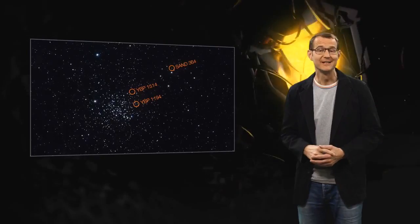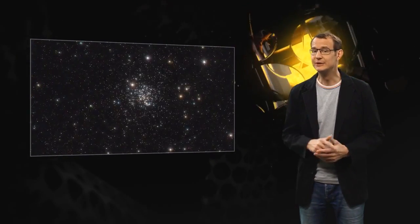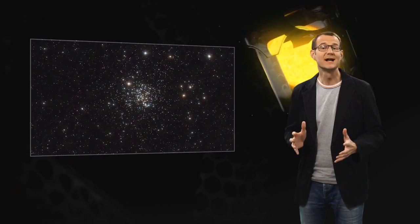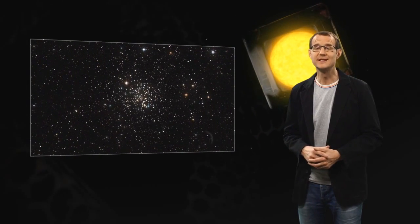But this finding is in fact a little unusual, because these three planets orbit stars inside a cluster of stars known as Messier 67.